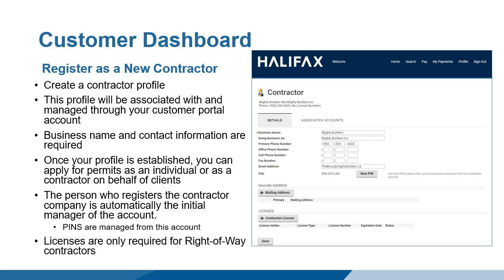At a minimum, contractors must supply a company name and phone number. The person who creates the initial contractor profile will automatically be designated as the Contractor Account Manager and will be provided with the company PIN. This can be changed at a later date. PINs are supplied to your employees and subcontractors so they can associate with the company.